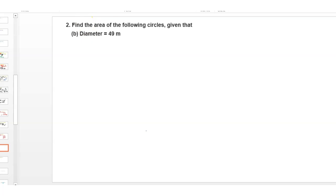Today's question is: find the area of the following circles, given that diameter is equal to 49 meters.